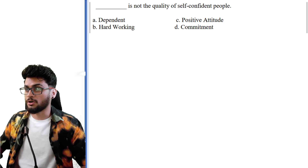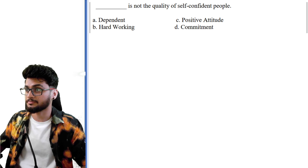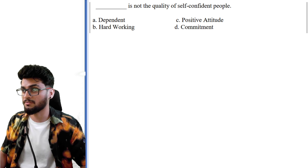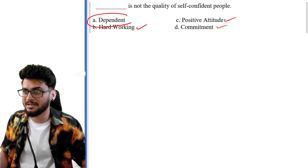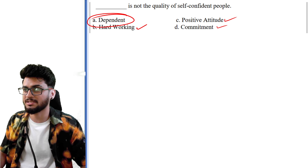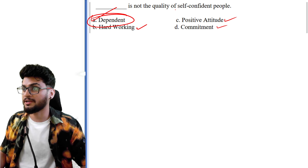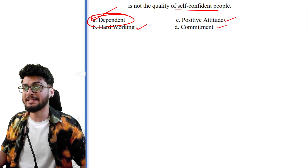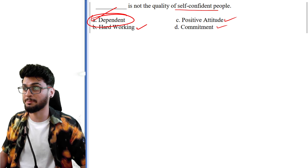'Dash is not the quality of self-confident people.' Hard-working is a good quality. Commitment is also a good quality. Positive attitude is also a good quality. But dependent is not a good quality. Hence dependent is the right answer. Self-confident people don't depend on others — they have positive attitude, they are hard-working, and they have commitment.